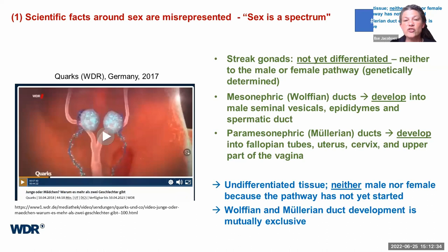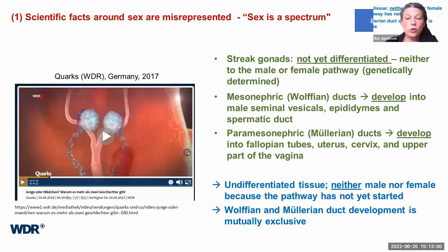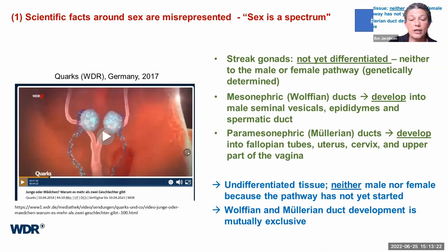We have in fact two duct systems — the Wolffian and the Müllerian ducts — which later develop into either the male or female genitalia, such as the fallopian tubes, uterus, cervix, or the upper part of the vagina. But you can either develop the Wolffian ducts (the male part) or the female duct. The development is mutually exclusive. So claiming that embryos are both male and female is absolutely wrong — what we have are underdeveloped, not yet differentiated structures.